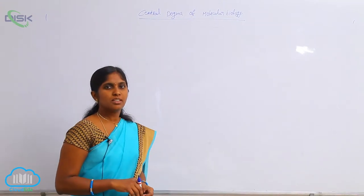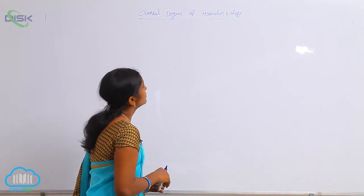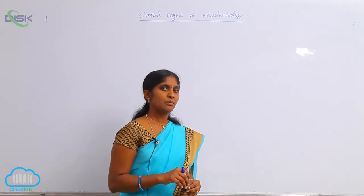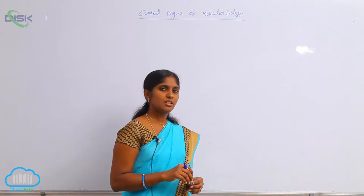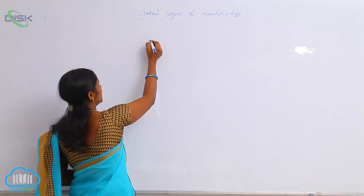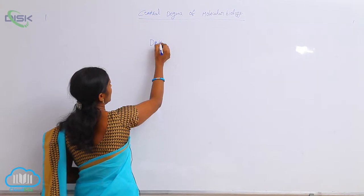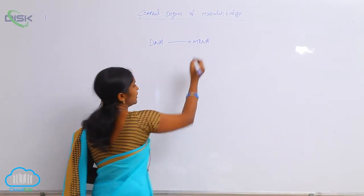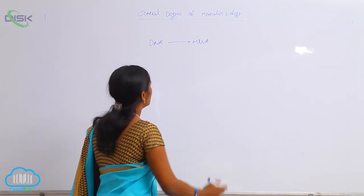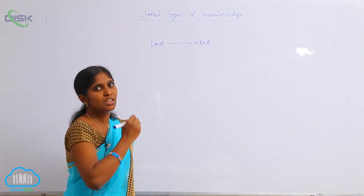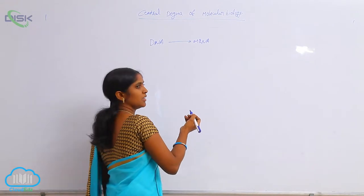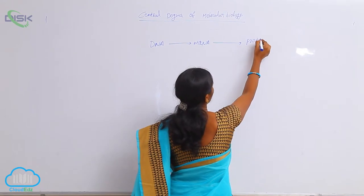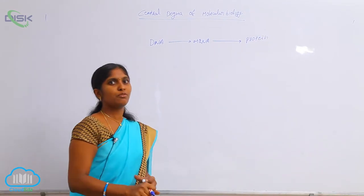The central dogma of molecular biology states that the flow of genetic information is unidirectional — from DNA to proteins, mediated by mRNA. The genetic information carries from DNA to mRNA and mRNA to proteins, meaning unidirectional genetic information flow.